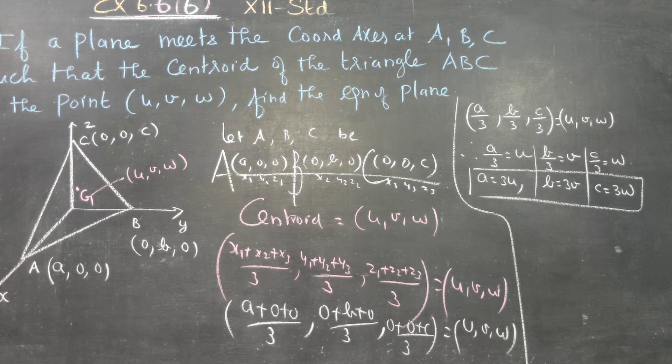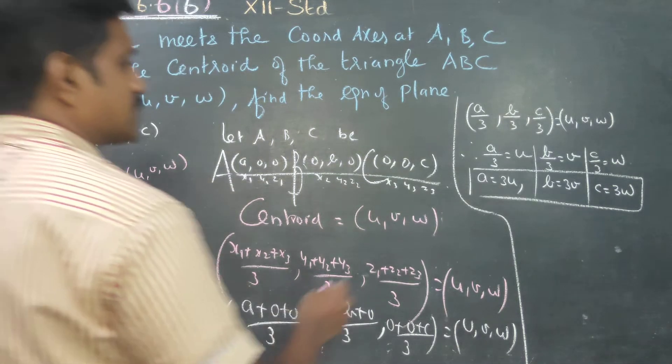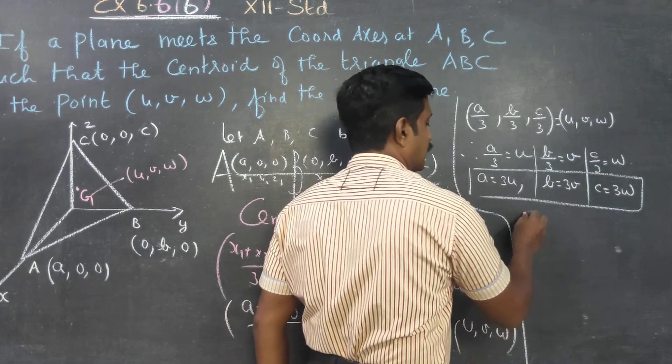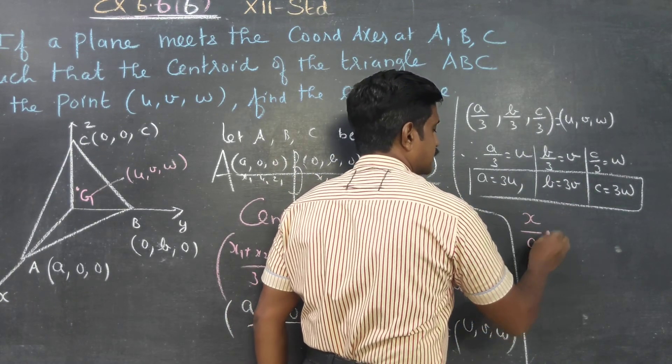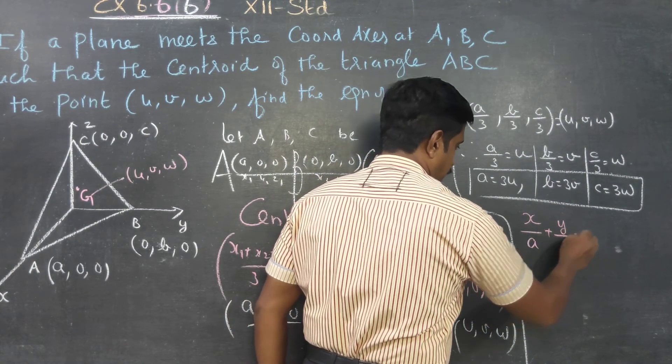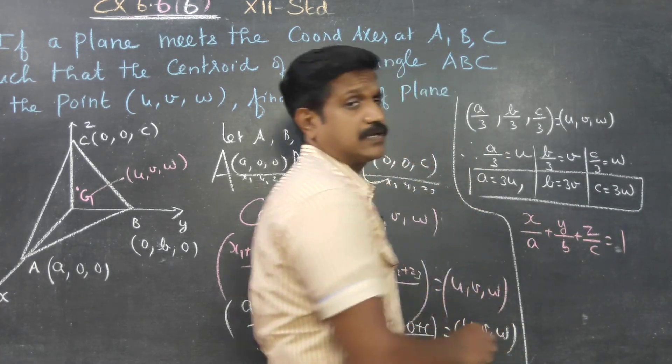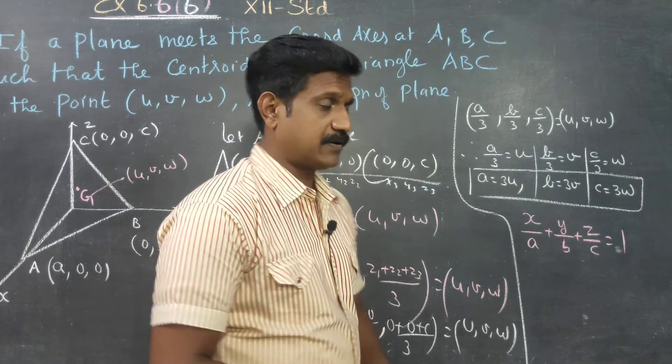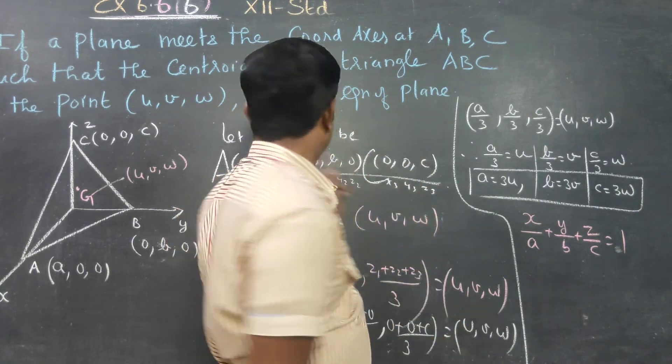The equation of a plane in intercept form is x/a + y/b + z/c = 1, where a, b, c are the intercepts.